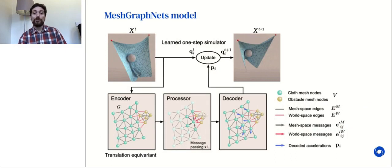After encoding the node and edge features, the processor performs several rounds of message passing. In each round, each node pulls messages coming from both mesh space edges in gray and workspace edges in red. This better reflects the real physical interactions, which may be contact interactions in workspace or interactions via the mesh. Finally, the decoder extracts the acceleration for each particle of the mesh, which is used to update the state of the mesh with an Euler integrator.